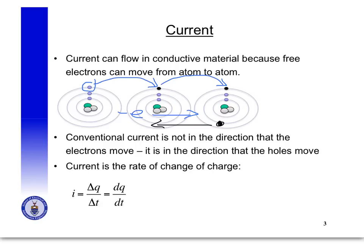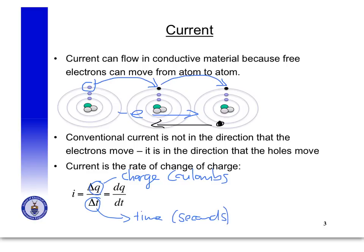Current is the rate of change of charge at a particular point in a circuit. We use the symbol Q to denote charge, and it is measured in coulombs. Current is the rate of change of charge at a particular point at a particular time, and time is measured in seconds. So current is the rate of change of charge per unit time, and that is measured in amperes, or amps, which is denoted by a capital letter A.